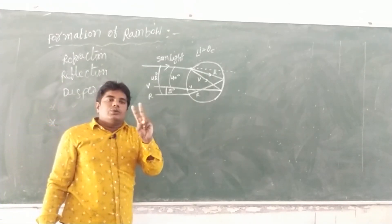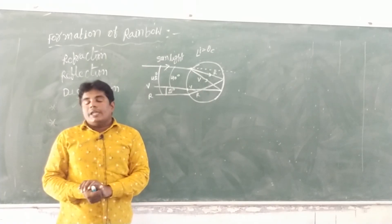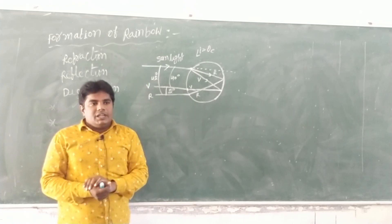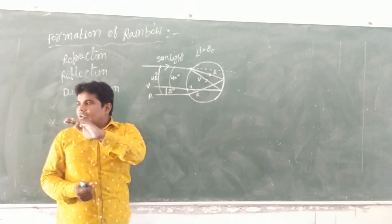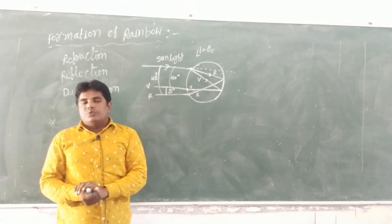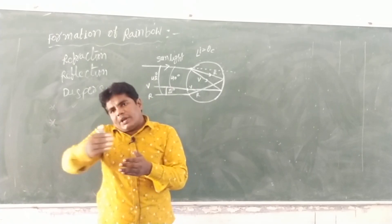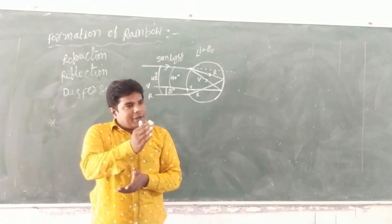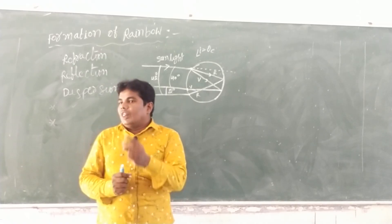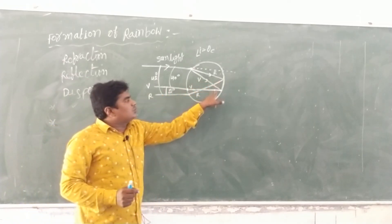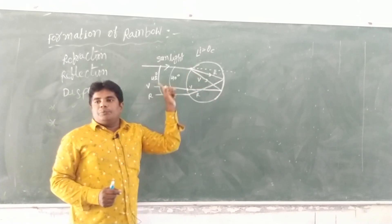This is the formation of the rainbow. Rainbows are of two types: primary rainbow and secondary rainbow. In a primary rainbow, red color is on top and violet color is on the bottom. The primary rainbow forms with two refractions and one reflection inside the water drop.